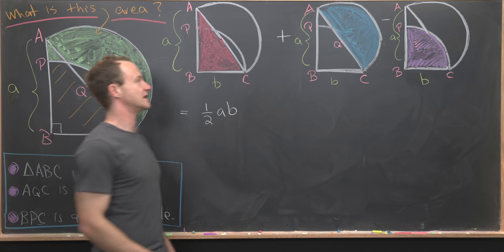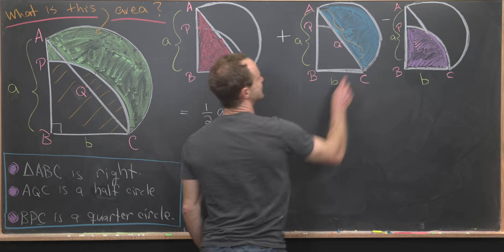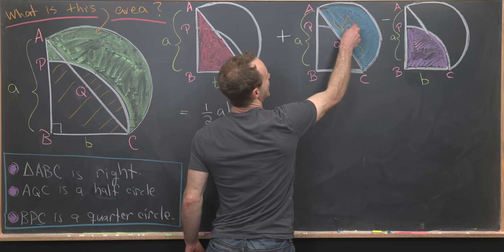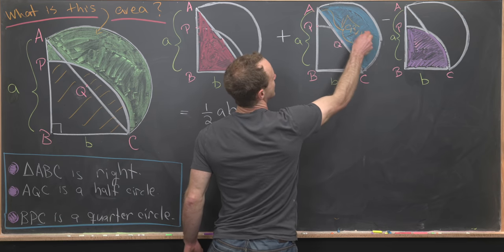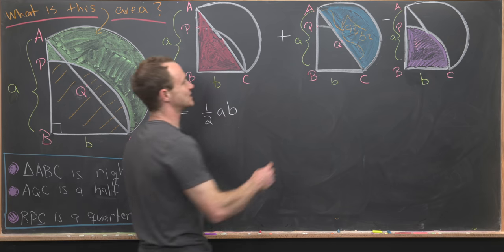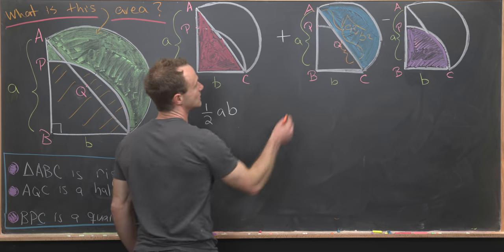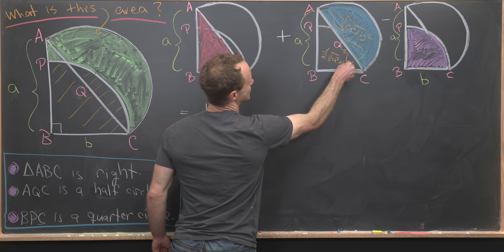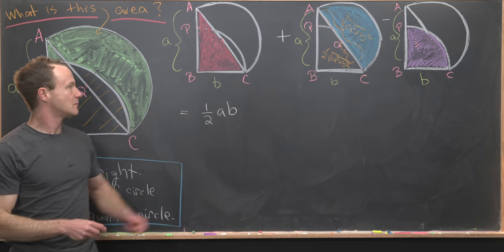Now we can move on to the area of this portion that's in blue. By the Pythagorean theorem, we can figure out that the hypotenuse of this triangle has length given by the square root of a squared plus b squared. That tells us the radius of our circle will be one half times the square root of a squared plus b squared.